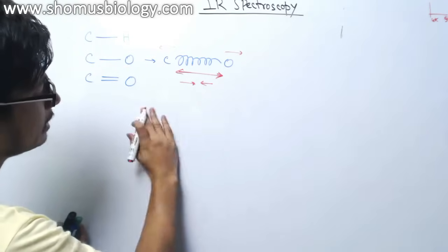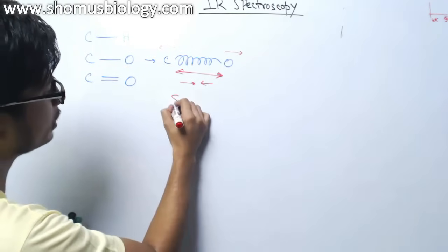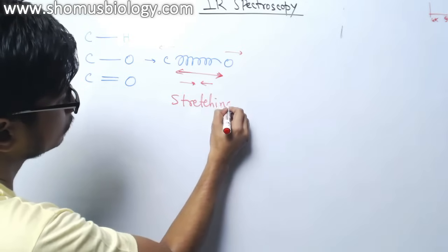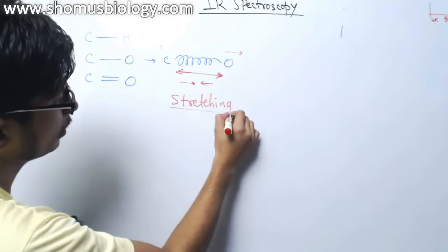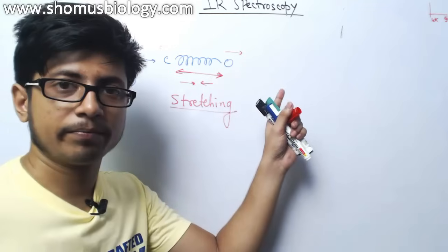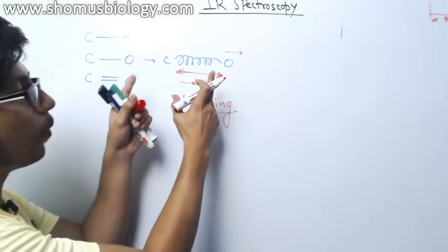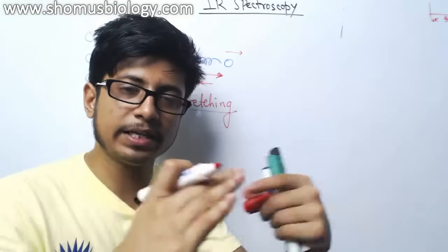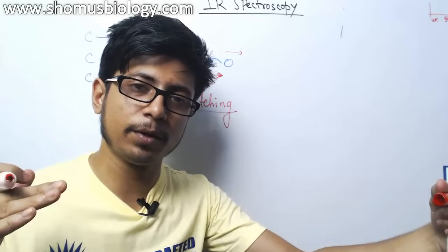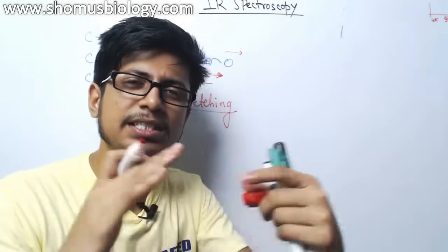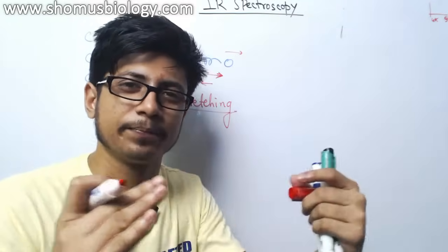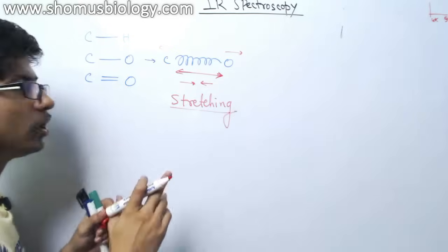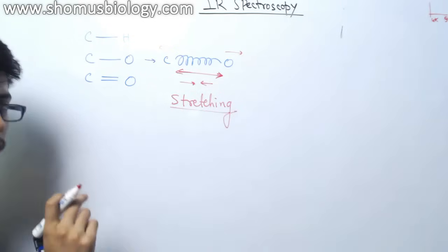This type of oscillation is known as stretching. The bonds can have a stretching effect — you take them away from each other and also bring them close, just like a spring. Stretching is always going on in all those bonds.